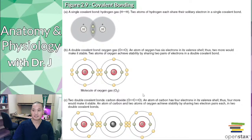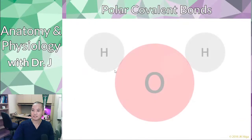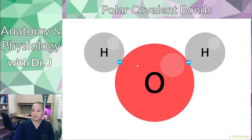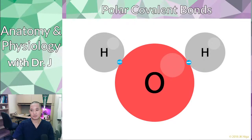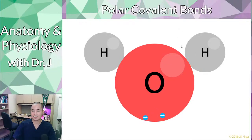In a regular covalent bond, atoms within molecules are actually sharing these electrons equally. With polar covalent bonds, we have a water molecule — H2O. The thing about oxygen is it likes to hold on to electrons a little more; it's a little stronger at pulling electrons toward its structure than the hydrogen atoms.